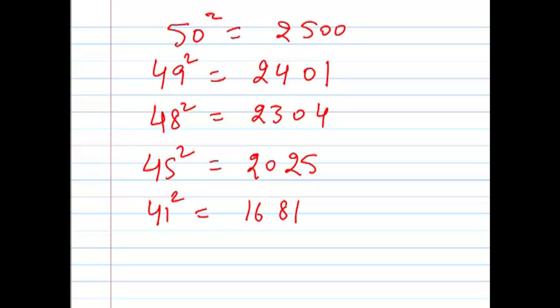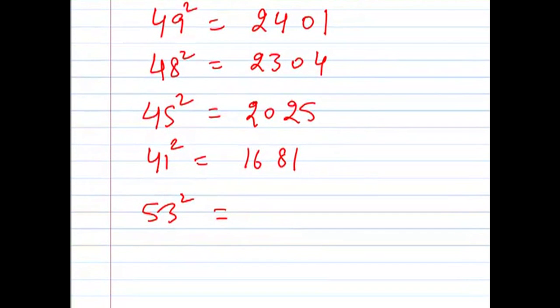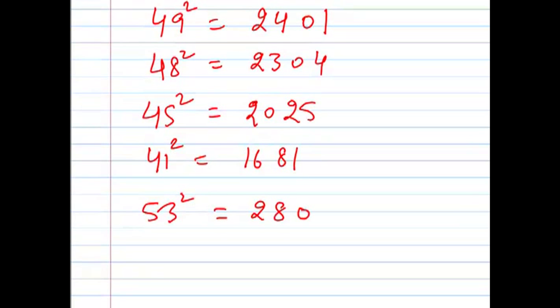Similarly, if you want to do a square of numbers above 50, then instead of subtracting, you have to add it. So 53 square will be 25 plus 3, that is 28, 09. Similarly, 56 square is equal to 25 plus 6, 31, and 36.